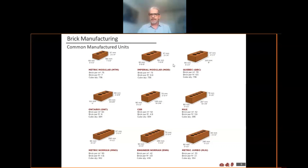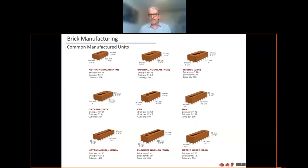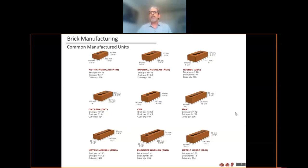The next move was into CSR, again largely a bid for economy in the wall. CSR was the end of the half running bond, or at least the end of a natural half running bond — CSR and anything above that in size works on the one-third running bond. Max size was the next step in residential and is still the most popular size made for residential construction today. Metric Norman, Engineer Norman, and Metric Jumbo are all sizes more specific to the ICI market.